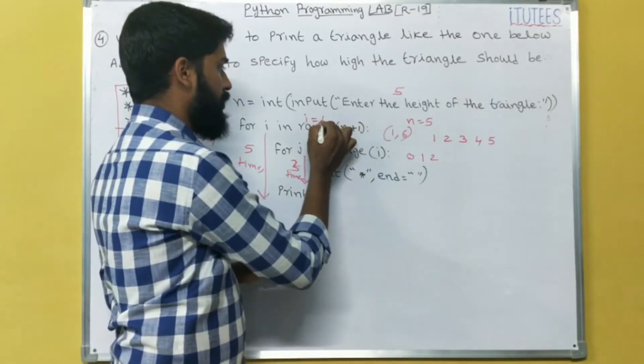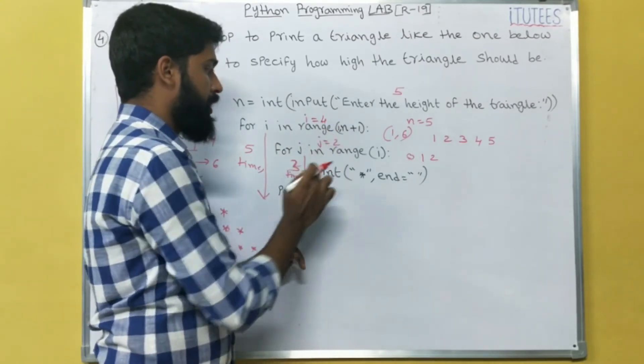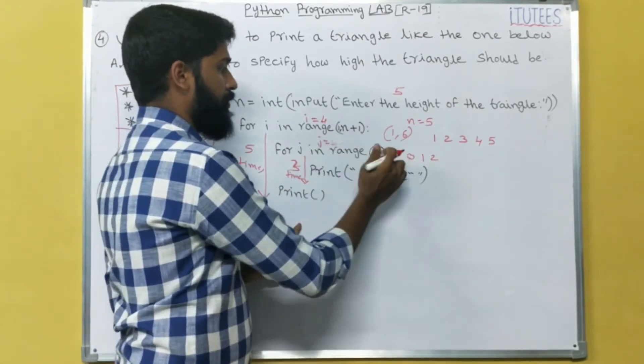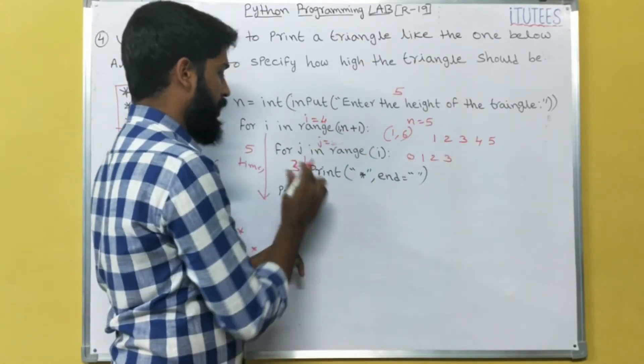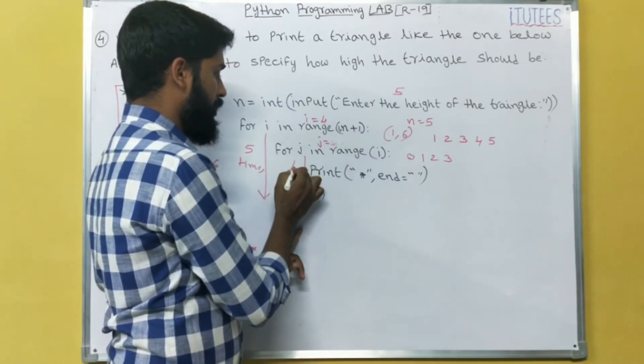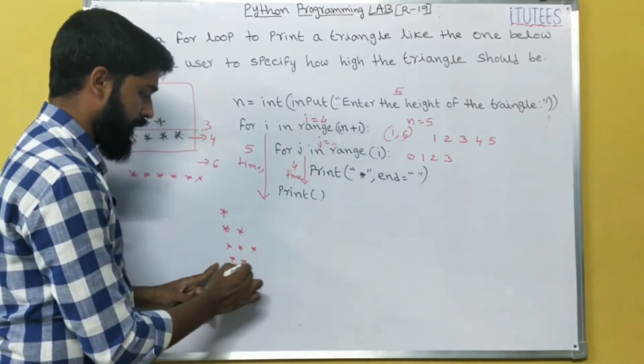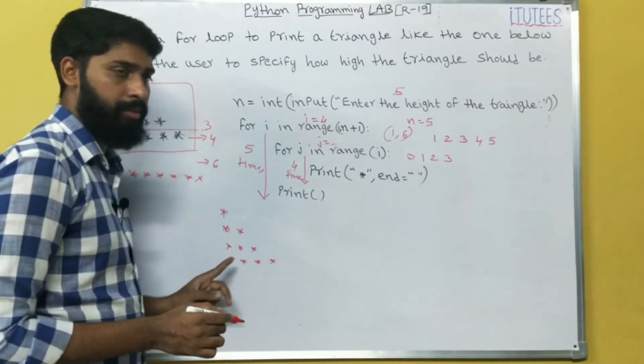In next iteration i equals to 4. J equals to range of 4, that means 0, 1, 2, 3, that means we enter into this block 4 times. So it prints asterisk, asterisk, asterisk, asterisk.